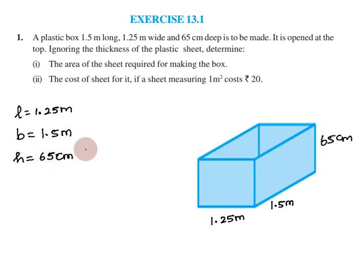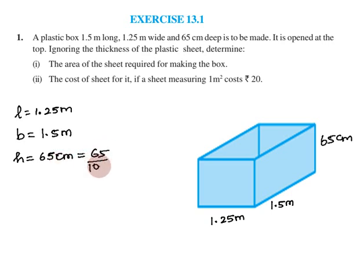The height is in centimeters while the other dimensions are in meters. Since 100 centimeters equals 1 meter, we divide: the bigger unit is meter. So 65 centimeters divided by 100 gives us 0.65 meters.